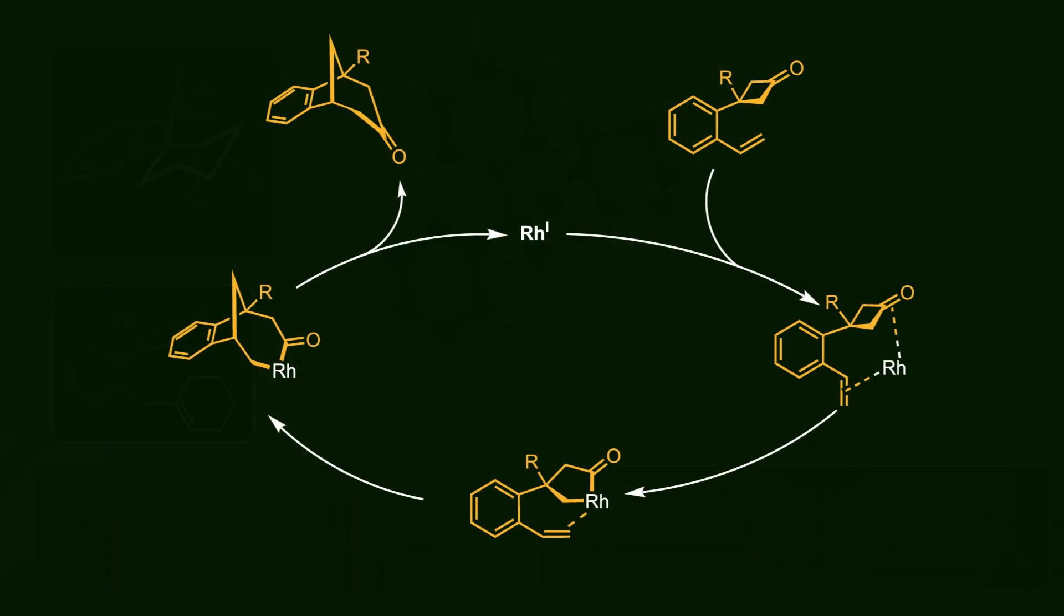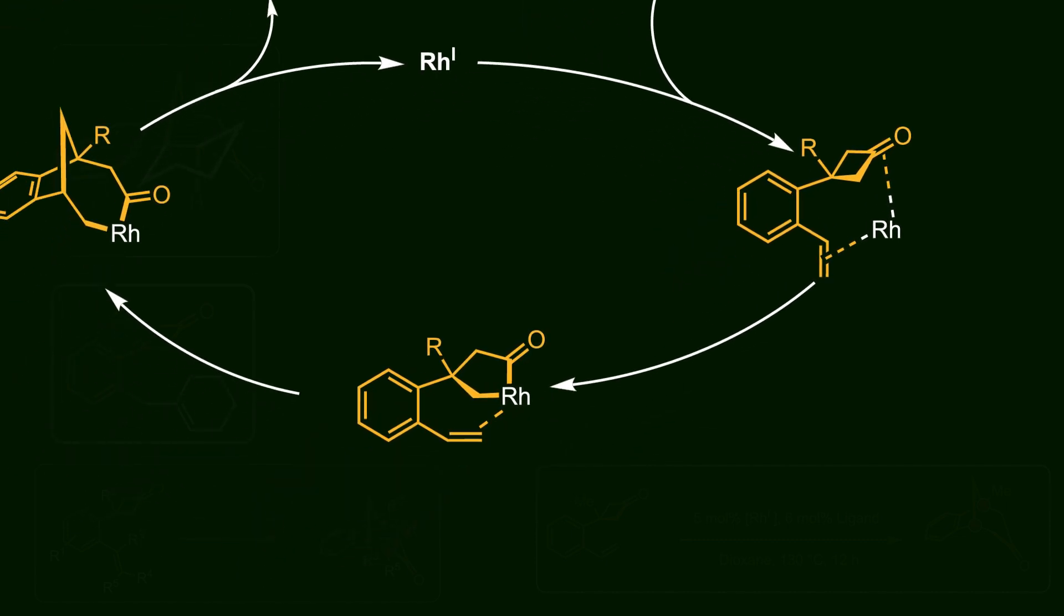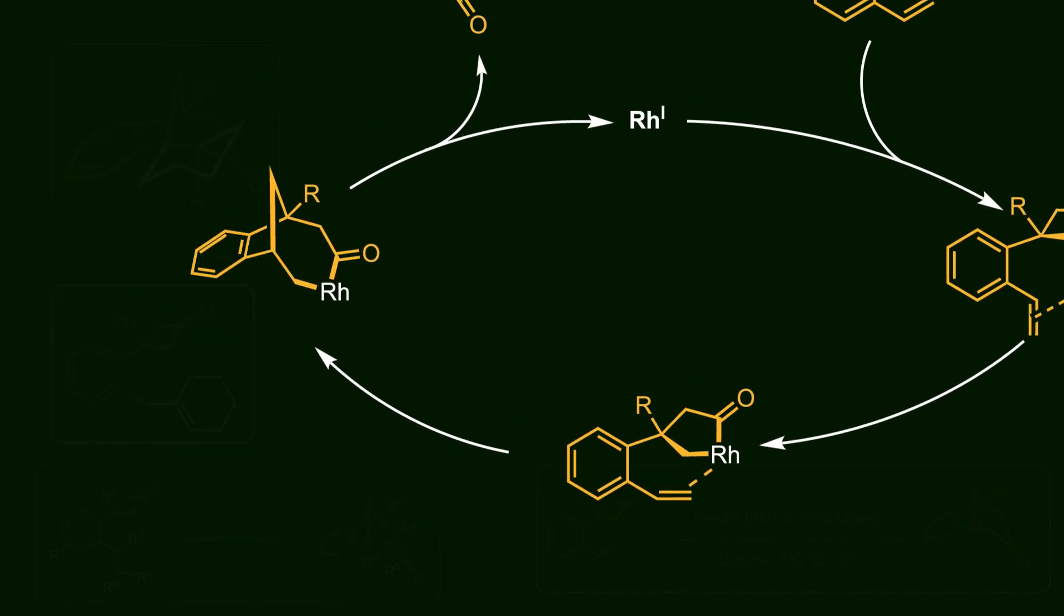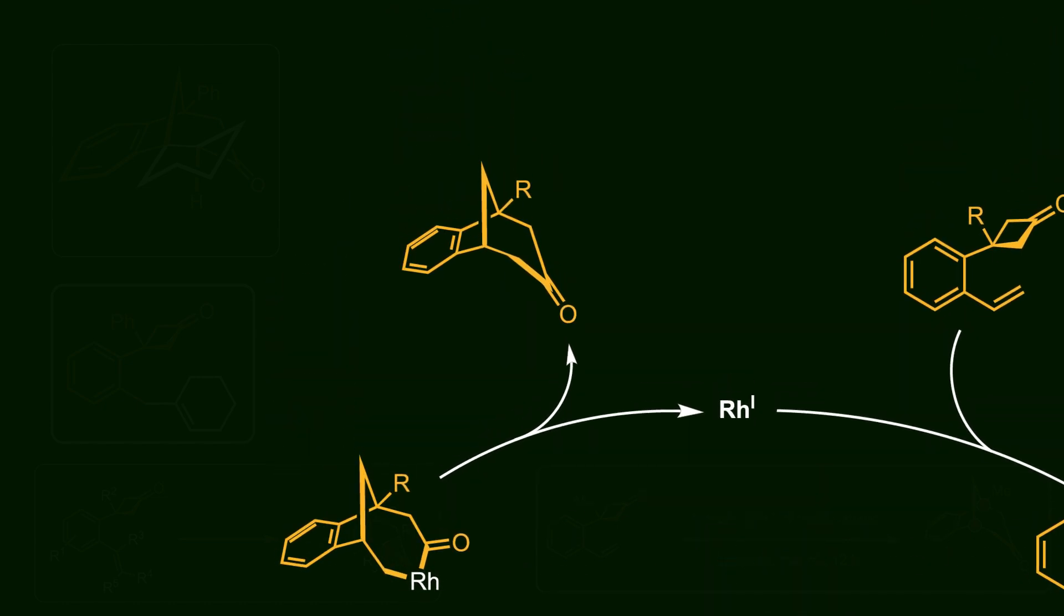In the first step, rhodium coordinates to the olefin and cyclobutanone. Next, during the cut process, it inserts into the carbon-carbon bond. Then intramolecular migratory insertion occurs in the molecule and the final bridged product is created by reductive elimination.